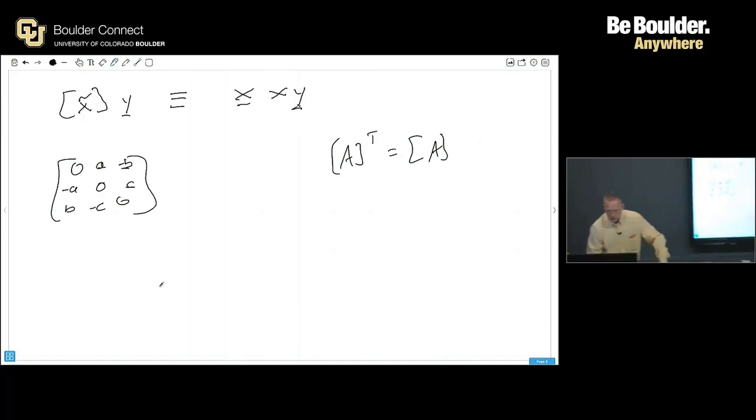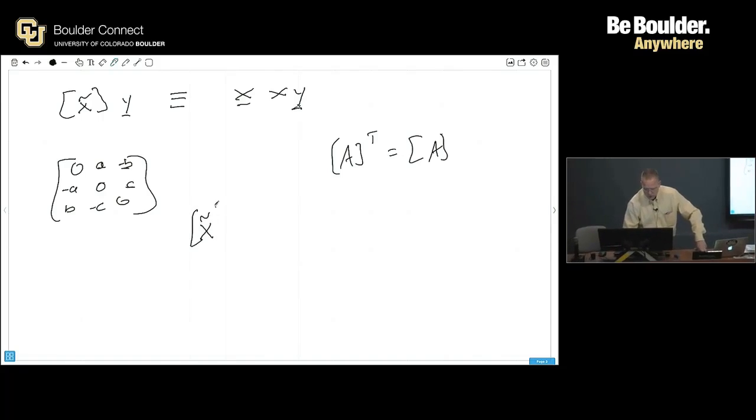But if it's skew symmetric, so if I have x tilde, and I transpose this, how does this relate to the x tilde now? Negative. Gives you the negative, right.